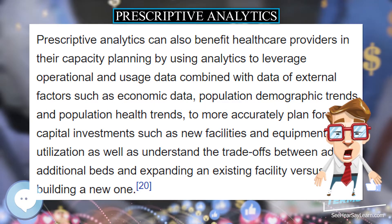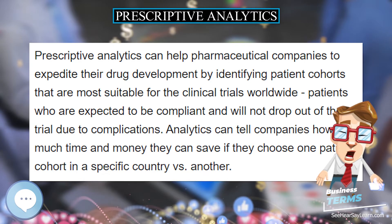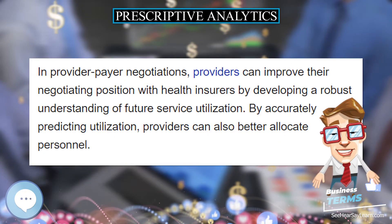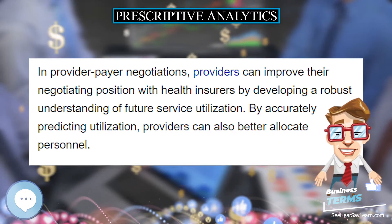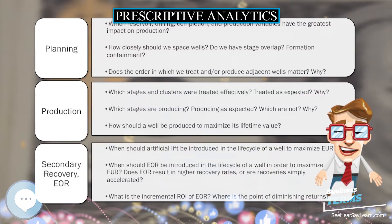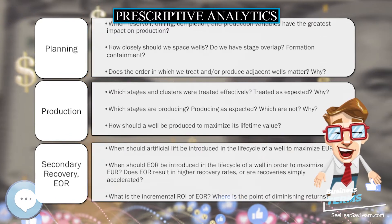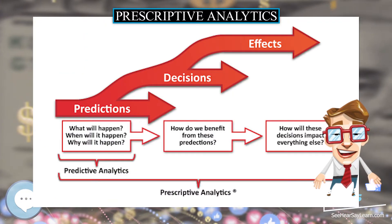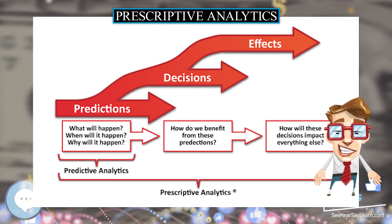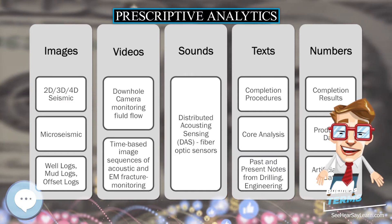Prescriptive analytics ingests hybrid data — a combination of structured data such as numbers and categories, and unstructured data such as videos, images, sounds, and texts — along with business rules to predict what lies ahead and to prescribe how to take advantage of this predicted future without compromising other priorities. All three phases of analytics can be performed through professional services, technology, or a combination.